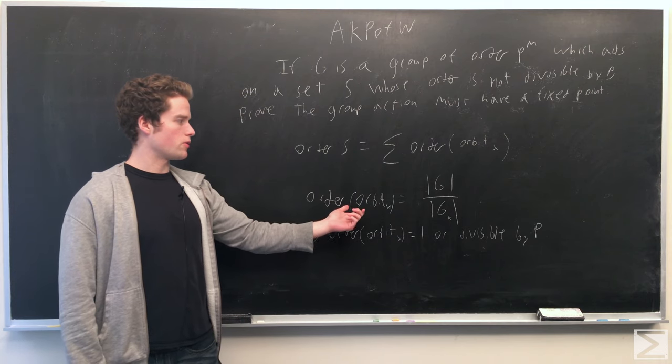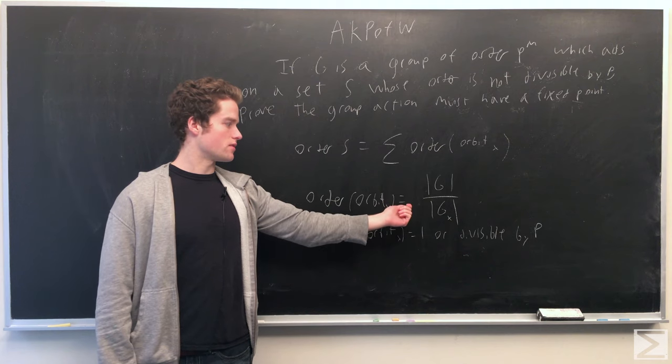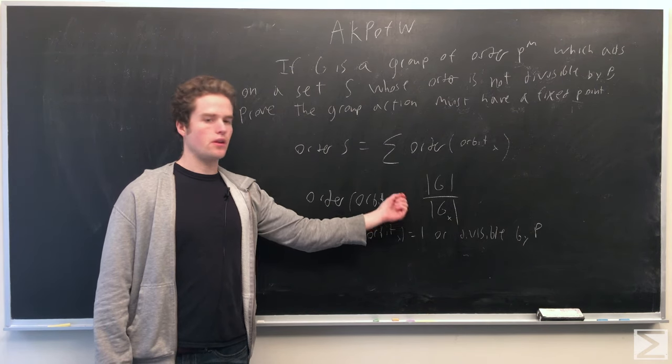And the order of the orbit of x is equal to the order of G divided by the stabilizer of x in G.